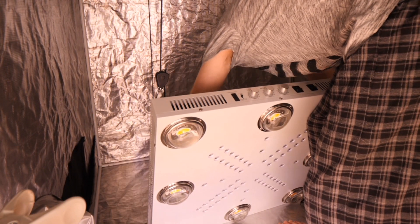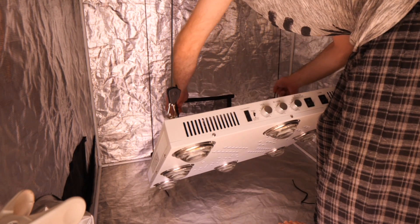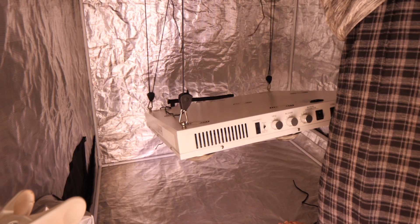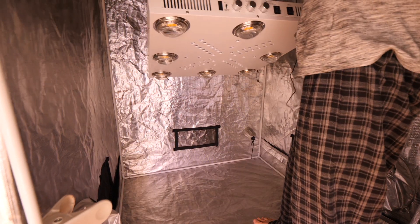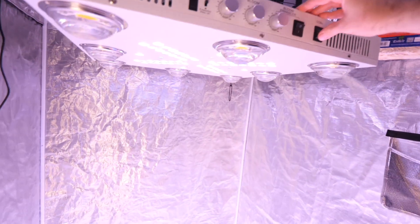Also, the lenses for the COBs have been upgraded to 120-degree lenses, so they provide a better light spread and really do an awesome job covering a 4x4 up to a 5x5 foot area.